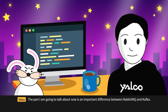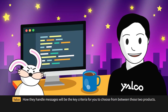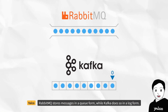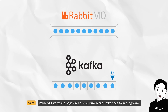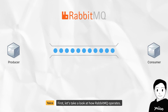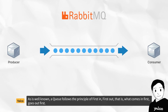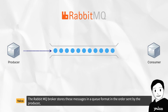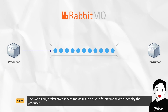The part I'm going to talk about now is an important difference between RabbitMQ and Kafka — how they handle messages will be the key criteria for choosing between these two products. RabbitMQ stores messages in a queue form, while Kafka does so in a log form. A queue follows the principle of first in, first out — what comes in first goes out first. The RabbitMQ broker stores messages in a queue format in the order sent by the producer.